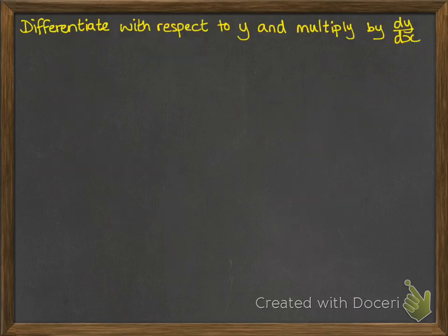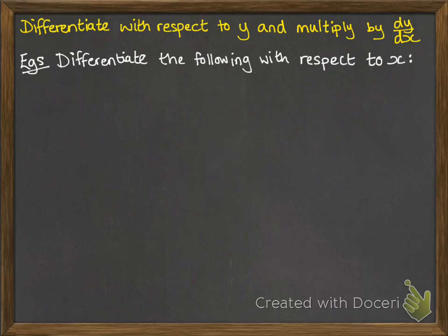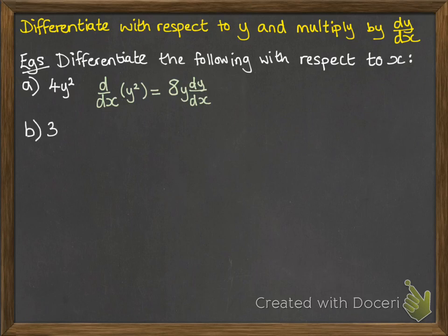So the key here is to differentiate with respect to y any terms that are y terms, and then multiply them by dy by dx. So let's do some examples. We're going to differentiate these following things with respect to x. So let's start with 4y squared. So differentiate it with respect to y would give us 8y dy by dx. So you've differentiated it with respect to y and then times by dy by dx.